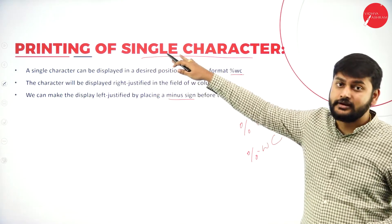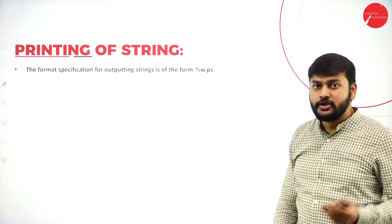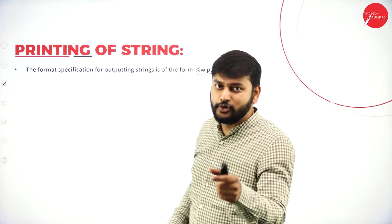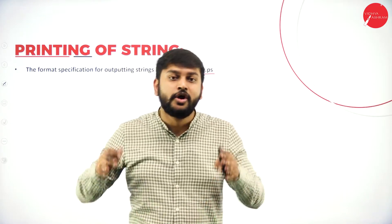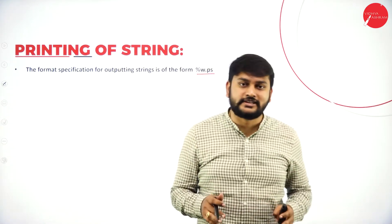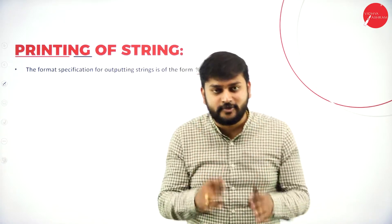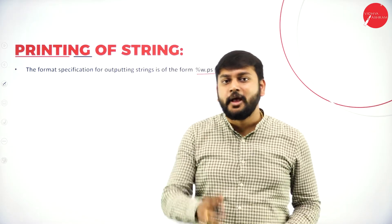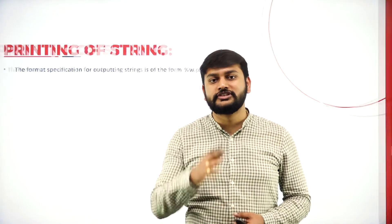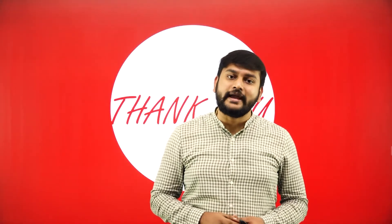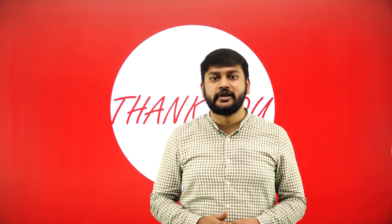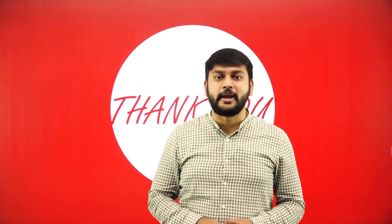How do I print a string? You will use the format %W.PS — W is the width, P is the number of characters from the start of the string to display, and S represents the string. By saying this, I have come to an end of this topic. Hope you liked it — I have kept it very simple and easy for all of you to understand. Take care, bye-bye.